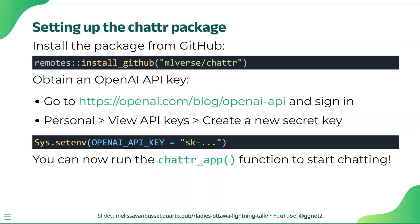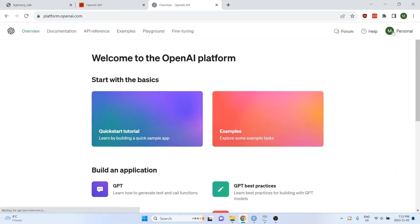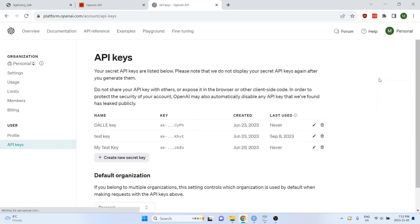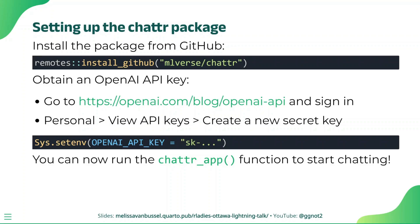You can get an API key by googling for OpenAI API key, logging in, and then going to personal, then View API Keys. From here, you can create a new secret key, and then you can provide that key to the sys.setenv function in R using the syntax shown here.